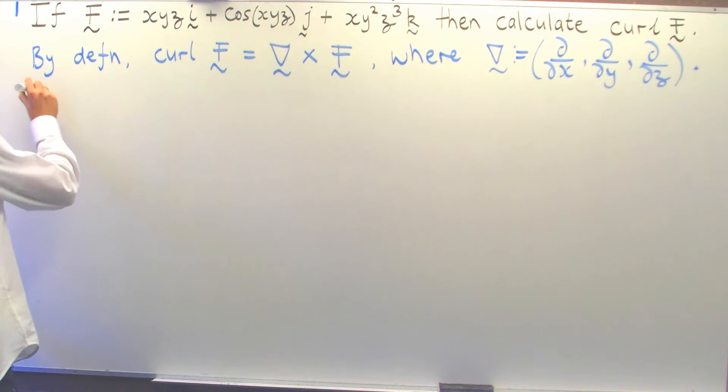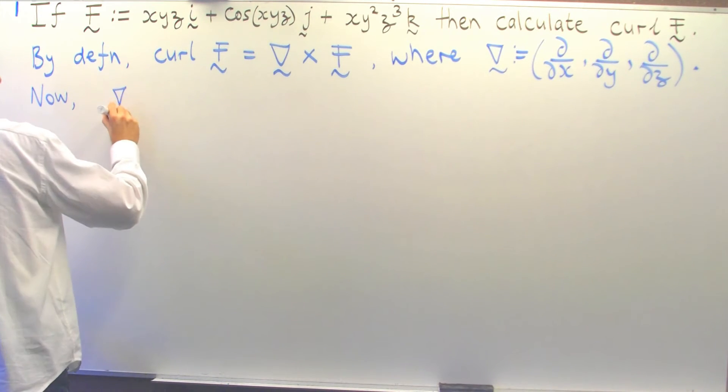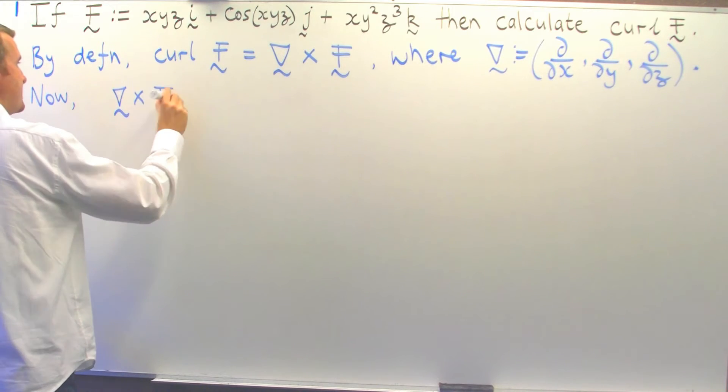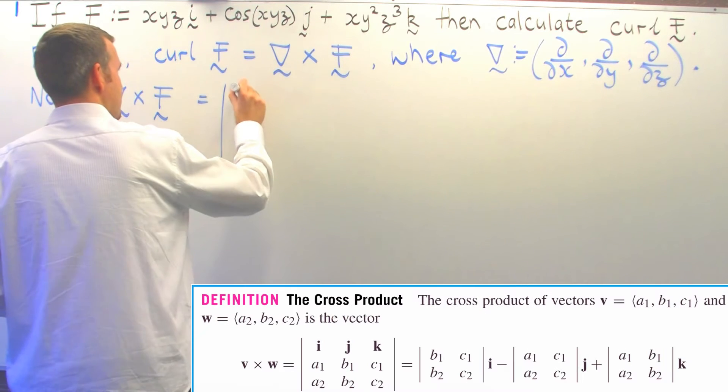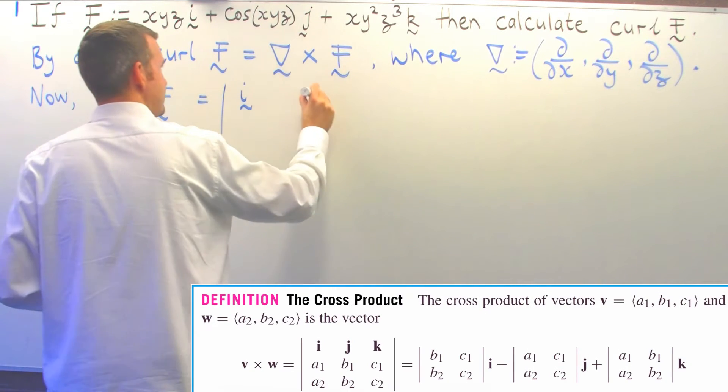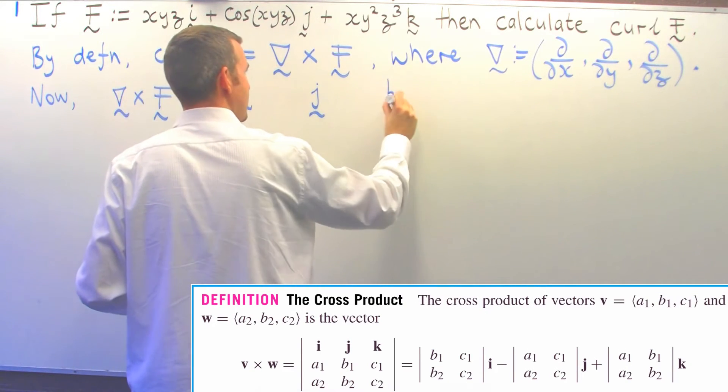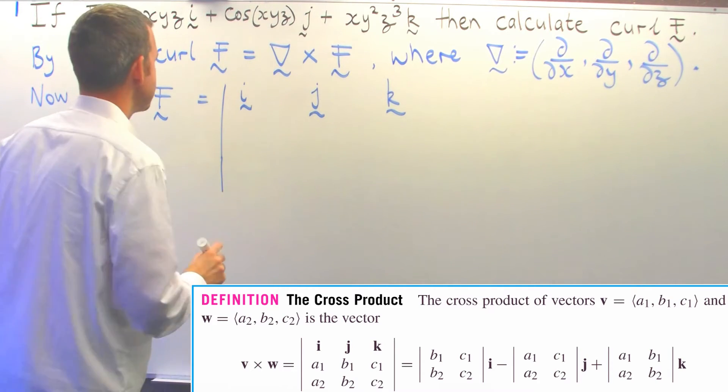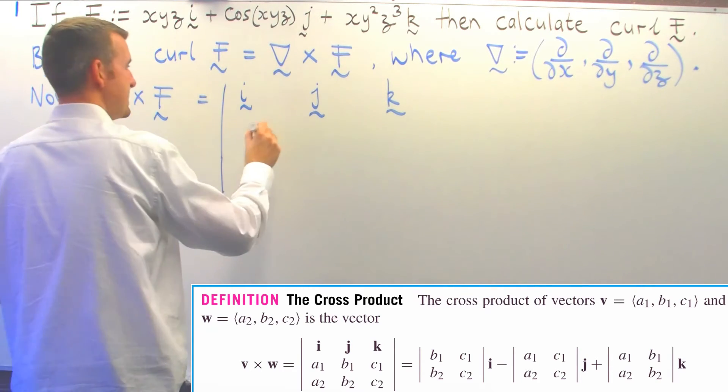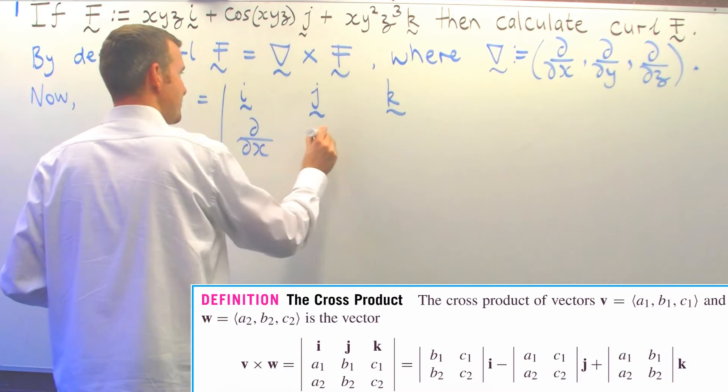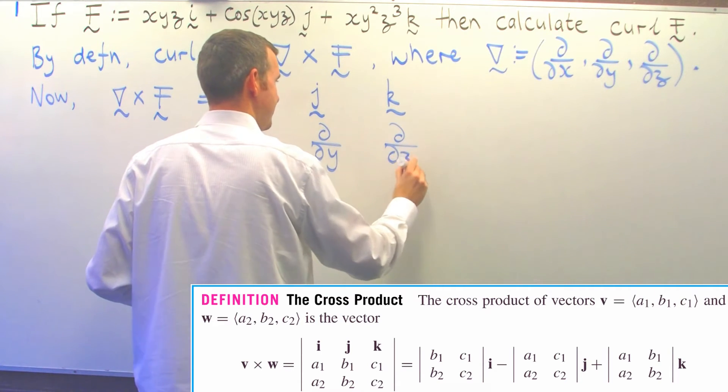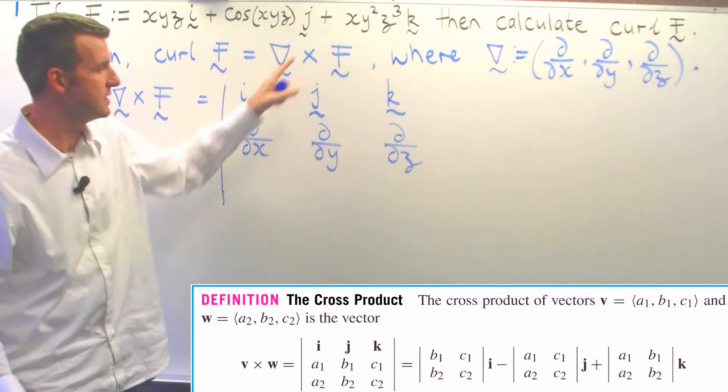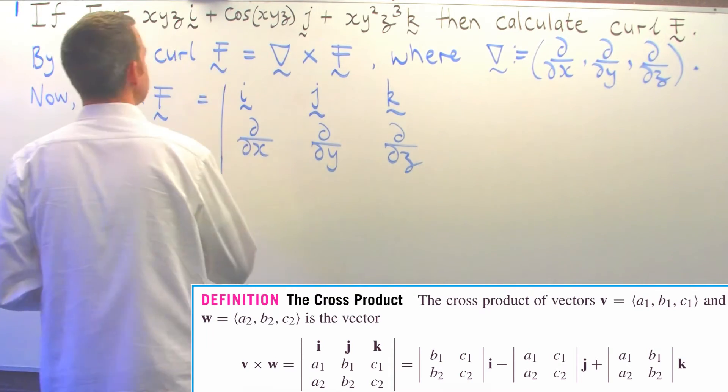Let's write this as we would a normal cross product. We're going to get something a little like this, so we write the components of our del operator in the second line and then the components of our vector field in the bottom row.